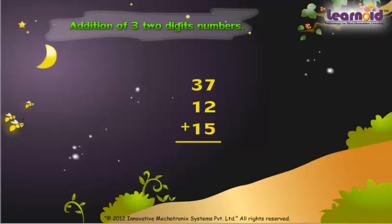The three numbers are 27, 12 and 15. First we will add numbers of one's place.